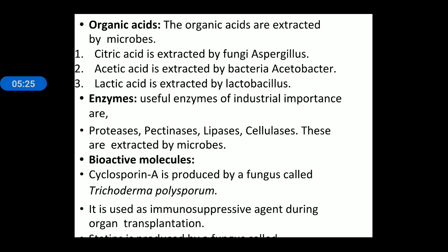Next are organic acids. Some organic acids are also extracted by microbes. For example, citric acid is produced by the fungus Aspergillus niger, acetic acid is produced by Acetobacter aceti, and lactic acid is produced by Lactobacillus. Some enzymes useful for industrial purposes are also produced by microbes, such as Protease, Pectinase, Lipase, and Cellulase. Proteases help in the breakdown of proteins, Pectinase breaks down pectin, Lipase breaks down lipid substances, and Cellulase breaks down cellulose.